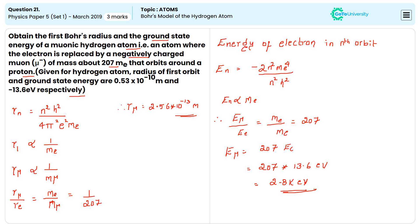This is the energy of the electron in the nth orbit.